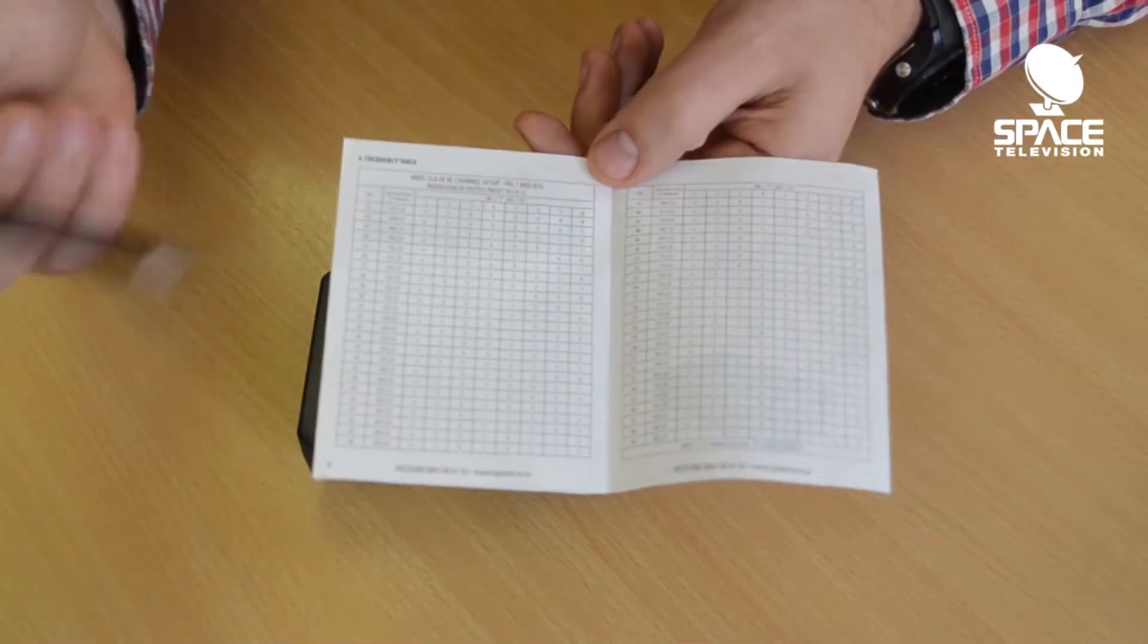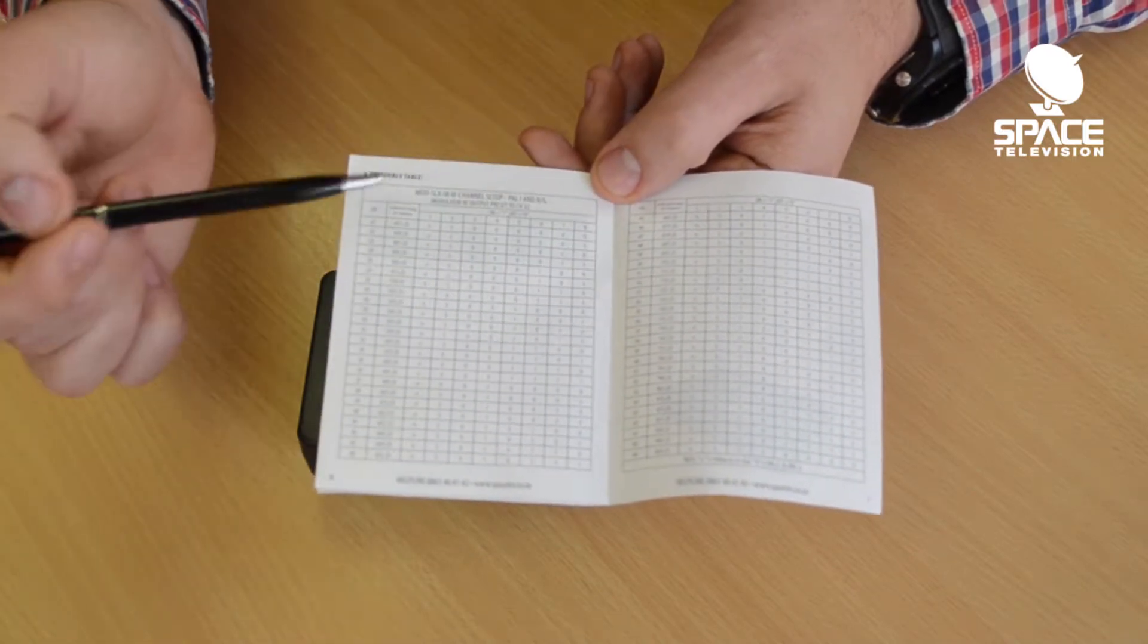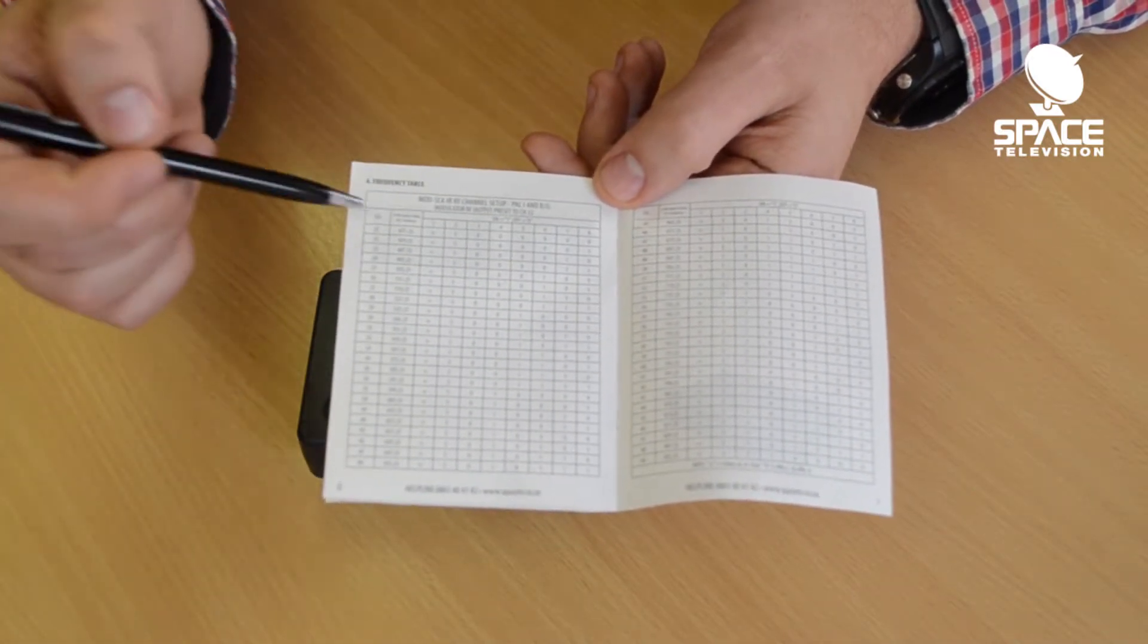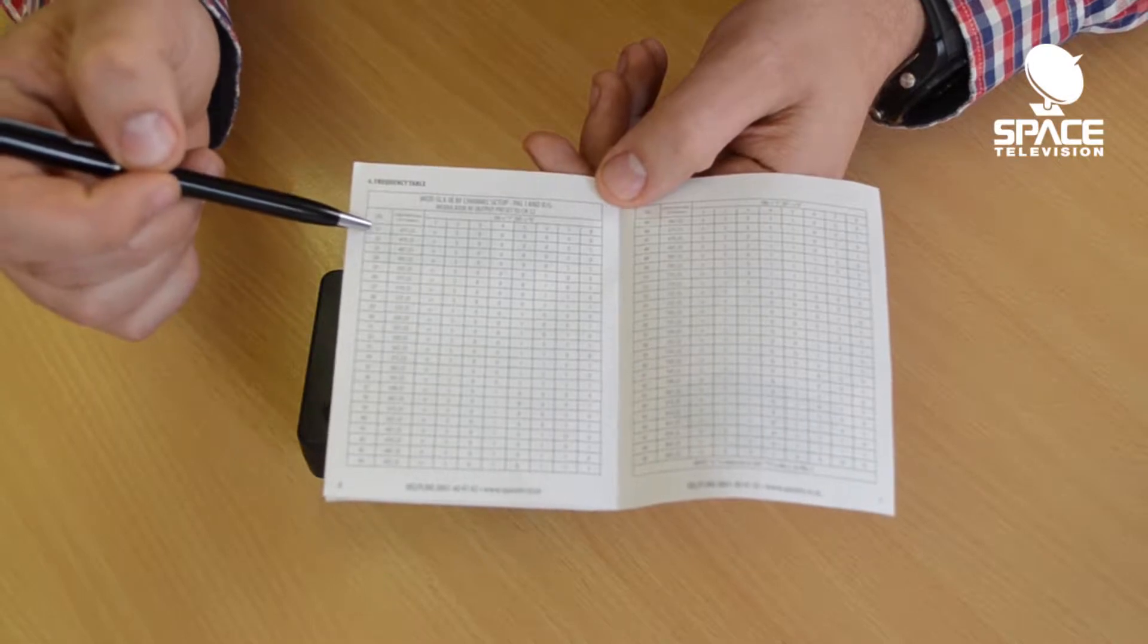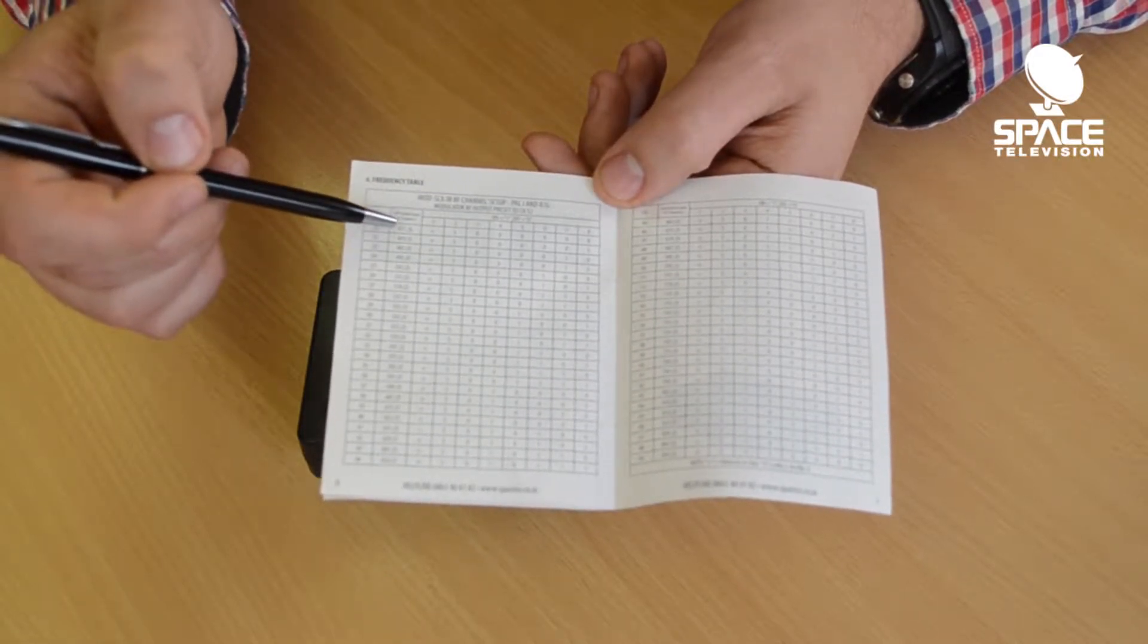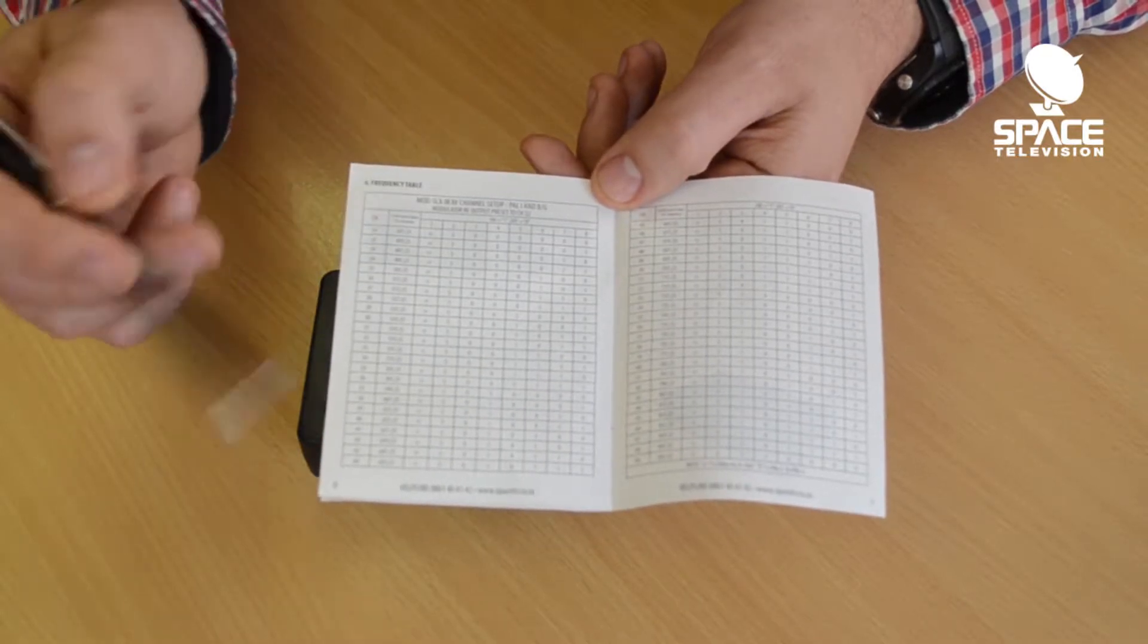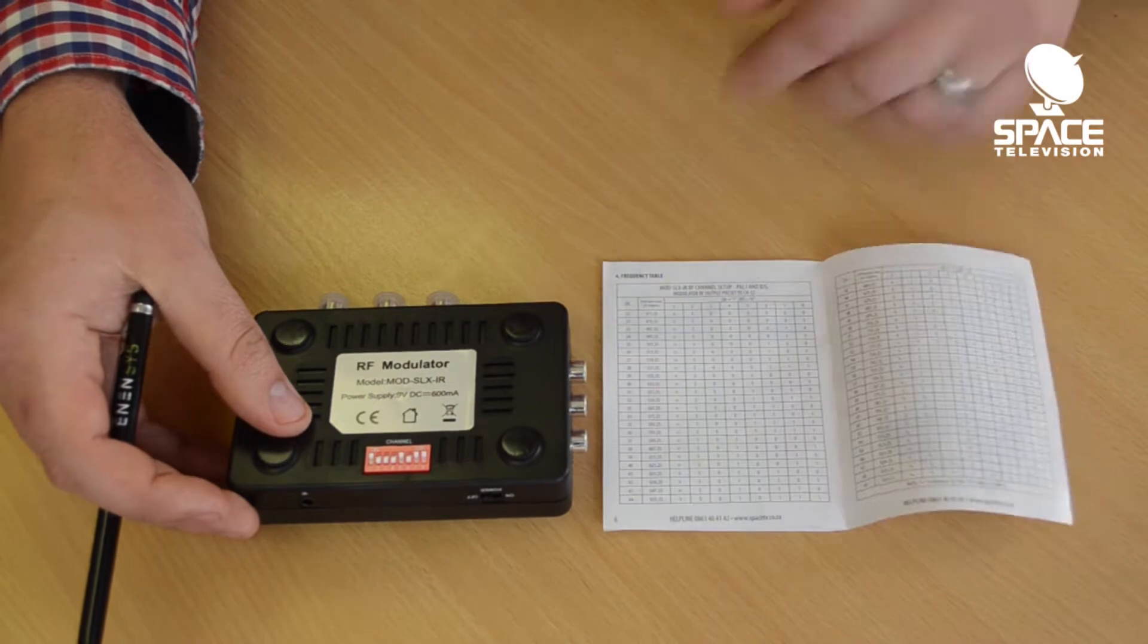Flip to the back and you'll notice there's a bunch of channels and frequencies, and what we need to program to the dip switch. Let's say we want to work with channel 21. The frequency of channel 21 is 471.25 megahertz. Let's have a look at the dip switch.